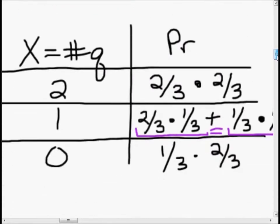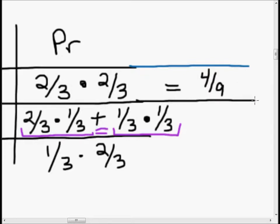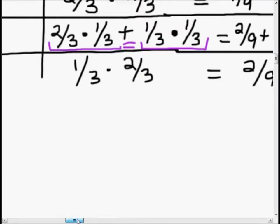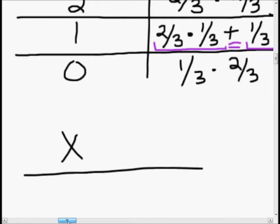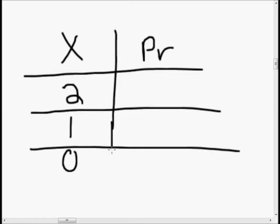Now let's go ahead and solve these. Two thirds times two thirds is four ninths. Two thirds times one third is two ninths, plus one ninth gives three ninths. And one third times two thirds is two ninths. Let's make this all nice and pretty in a table: x and probability. We have x equals two, one, and zero. With probabilities four ninths, three ninths, and two ninths respectively.